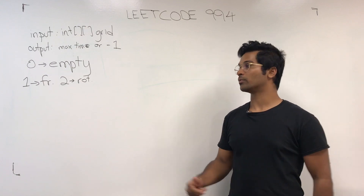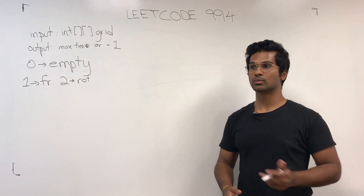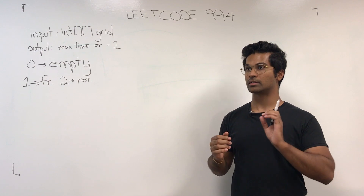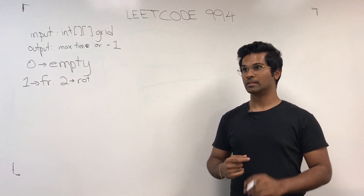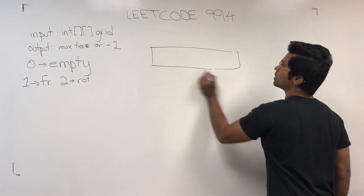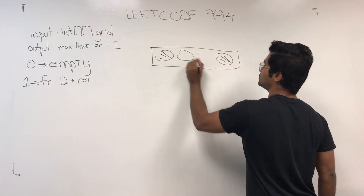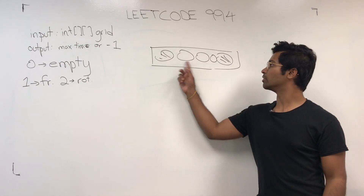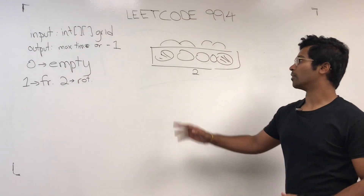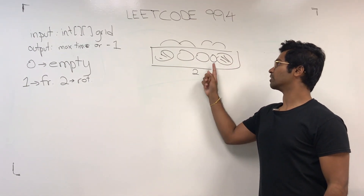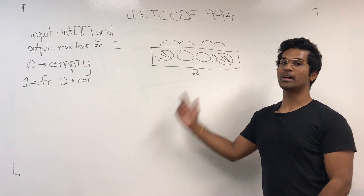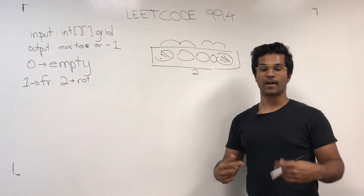We're going to solve it using BFS, and the key to BFS is using a queue. The way we keep track of this max time is to find out the maximum distance of a fresh orange to its closest rotten orange. For example, if we have two rotten oranges and three fresh oranges, the answer is going to be two. The trick is we have to put in all the rotten oranges as origins.